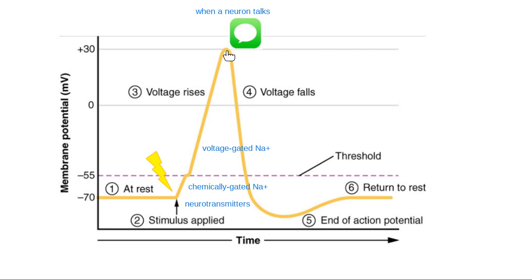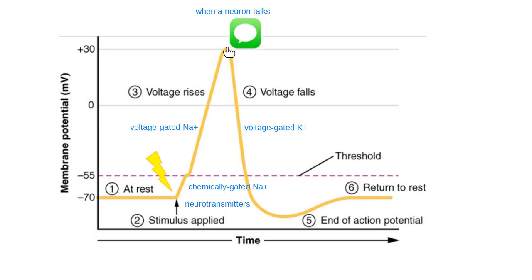Once the neuron talks to its neighbor, it realizes the membrane charge is completely wrong, and it opens a channel to get back to normal. Over here on the opposite side of the graph is when voltage-gated potassium channels open. They open when the charge is positive 30. Potassium is spat out — because spitting out potassium makes the inside charge more negative — so the membrane charge gets back down toward normal.